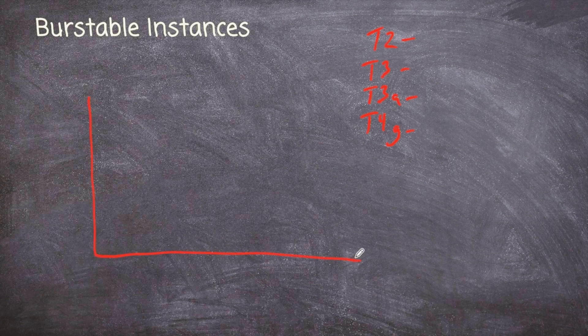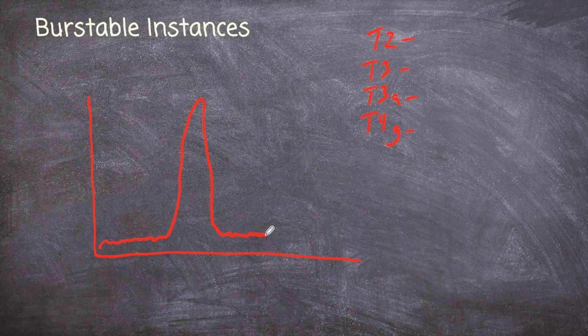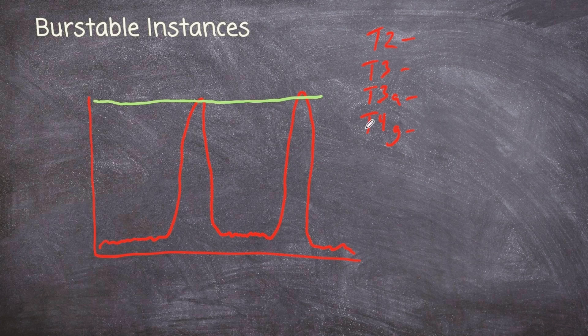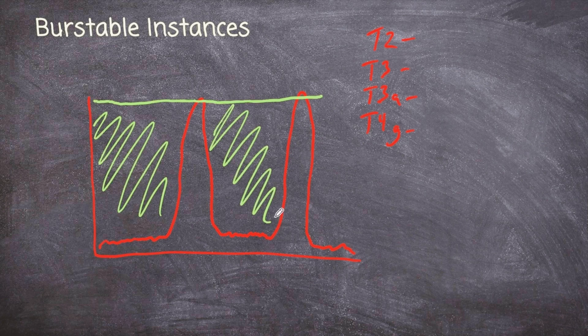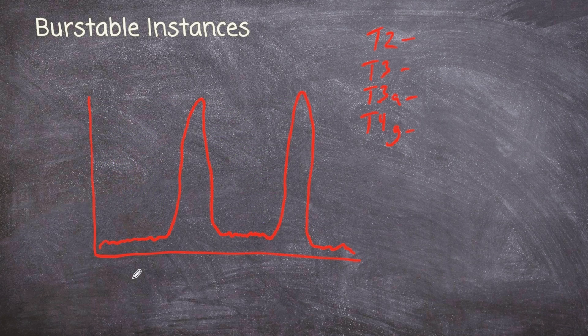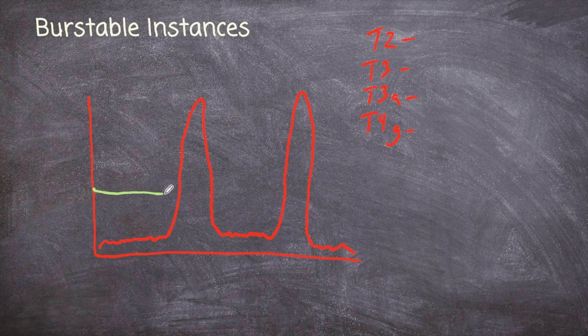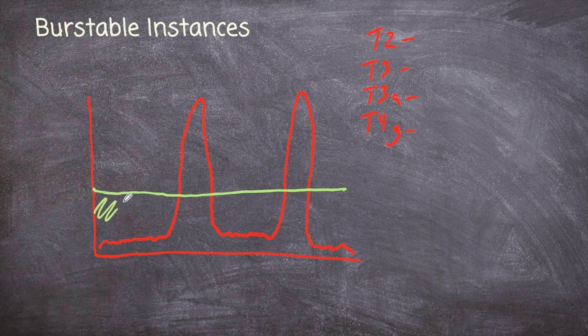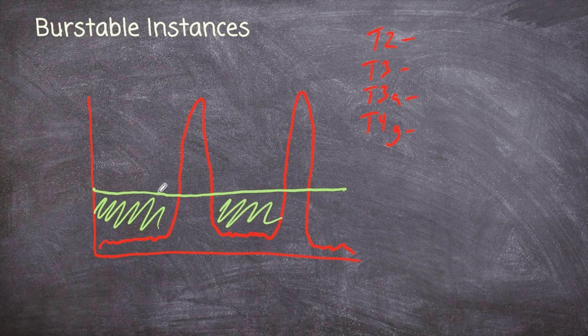So what we might be tempted to do is maybe select an instance that would be capable of that performance, that level of performance, because we have the spikes. The problem is all this other space in here is just going to be wasted, and the bigger the instance, the more we pay. So this would be wasted money. So instead, maybe I want to select a burstable instance that's maybe right here.